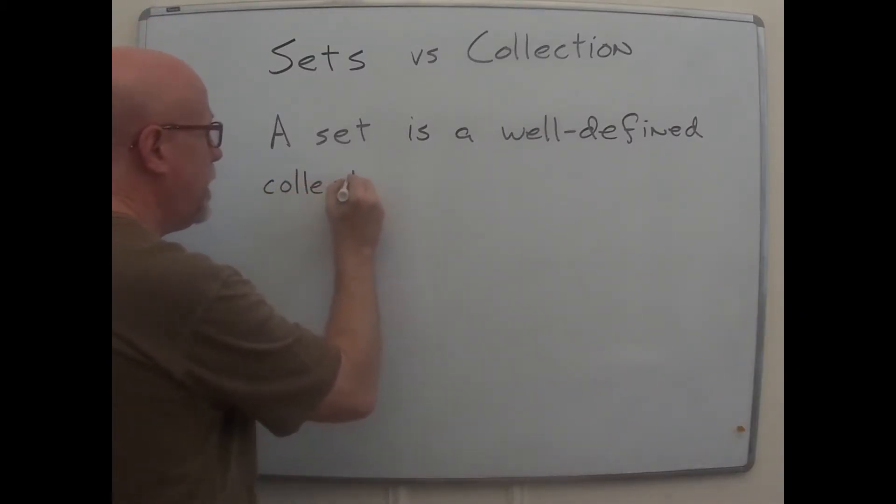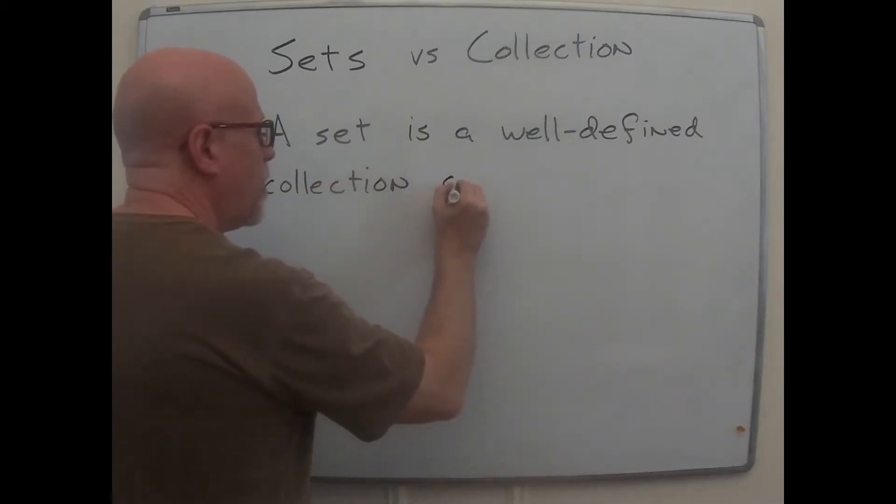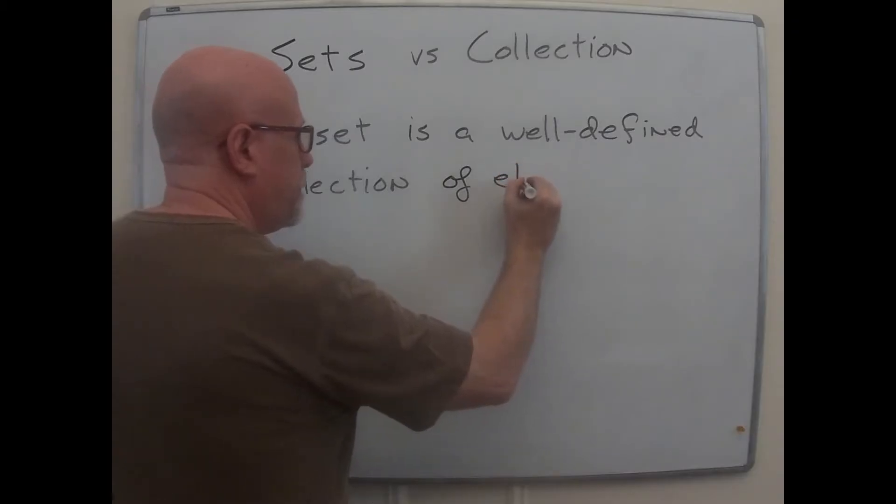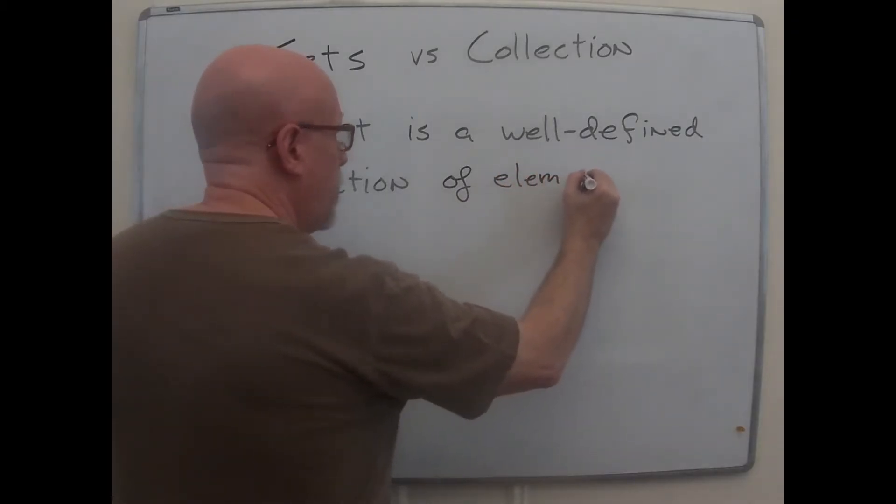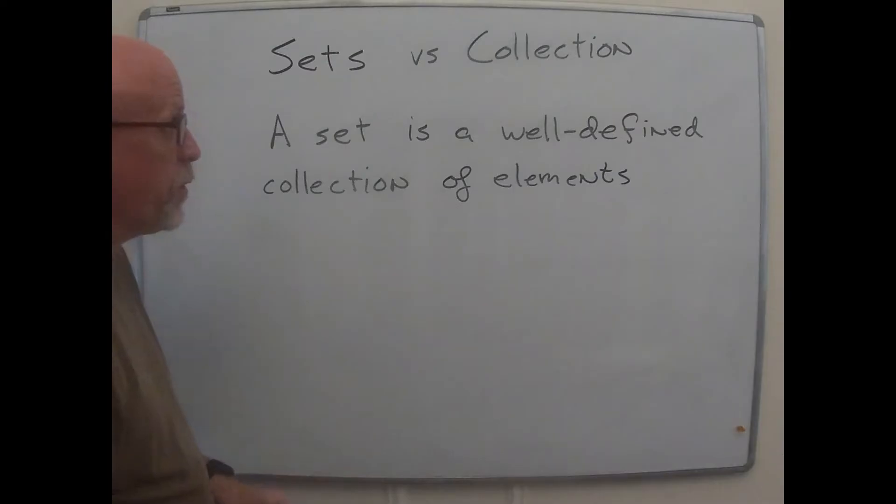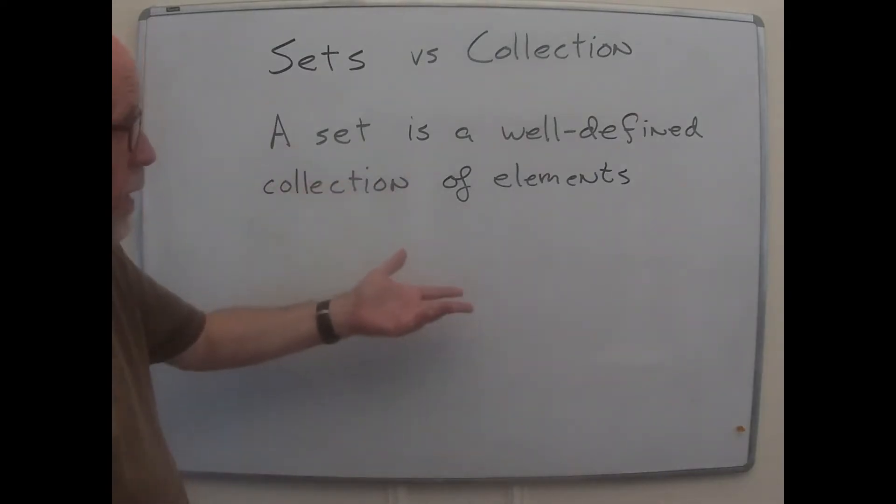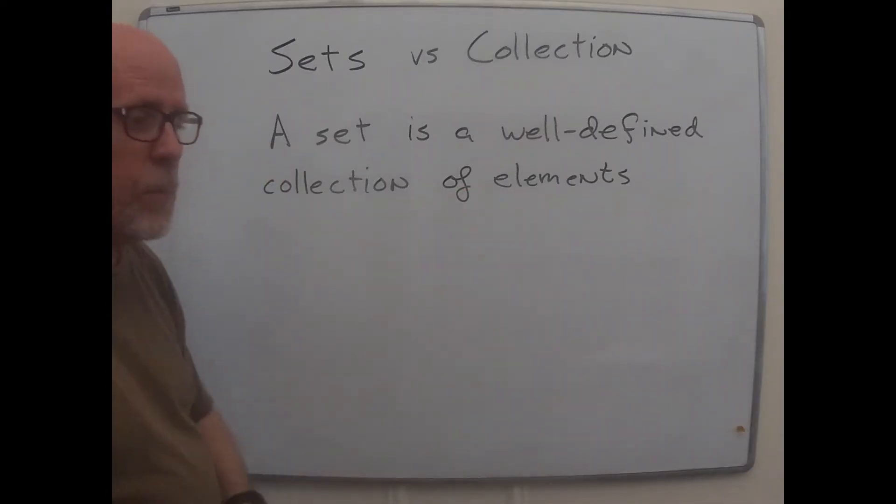The things that are in a set are called elements. And they can be weird things. They can be all kinds of crazy things. For instance, you could have other sets. You could build a set that has sets as its elements. But most often, what we're going to be thinking about is you'll have a set, and then the elements will be numbers.